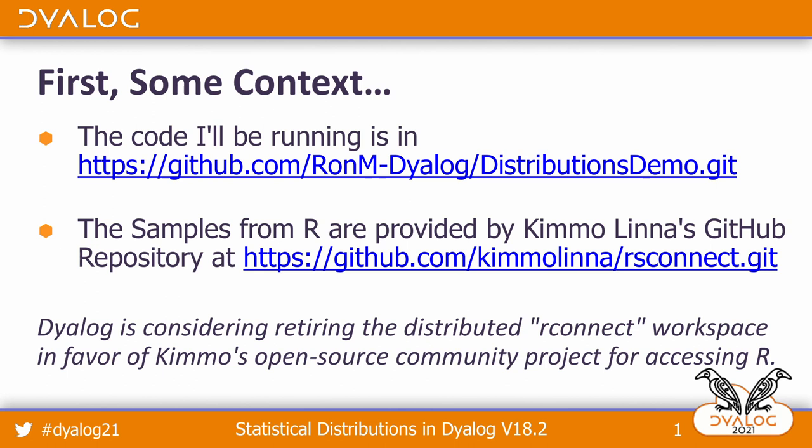Part of the presentation uses samples from R as well as from APL. Those samples were provided by Akimo Luna's GitHub repository at this location. I'll mention that Dyalog is actually considering retiring the distributed R-Connection workspace in favor of Akimo's open source project.